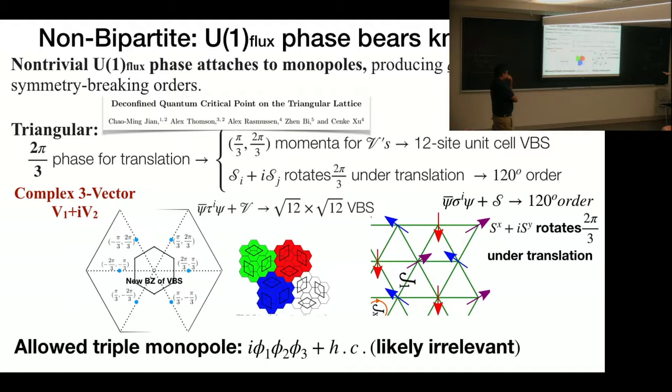And moreover, we find the lowest order of symmetry-allowed monopole term is a triple monopole, which is likely relevant. So it means that this U(1) Dirac spin liquid can actually be a stable phase.